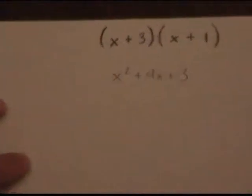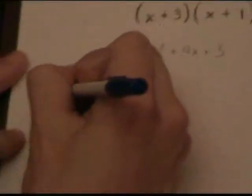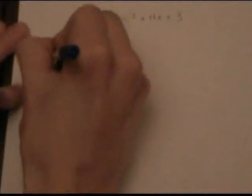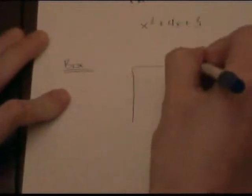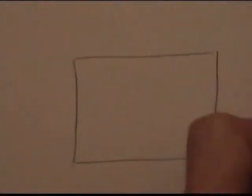Next, we're going to move into our representational step. To do that, we're going to use a method called the box method. What you do is first you draw a box. Inside that box, you divide it into quadrants.